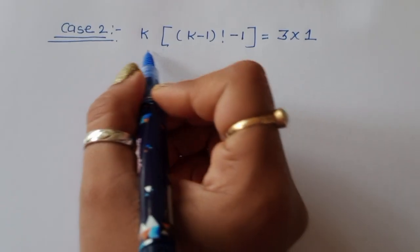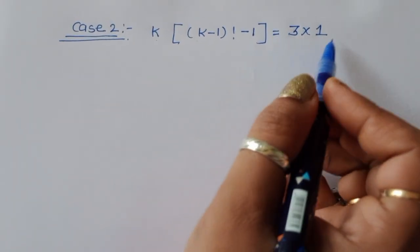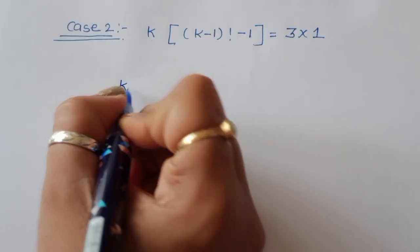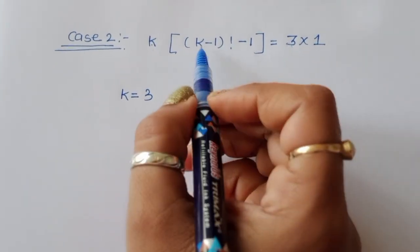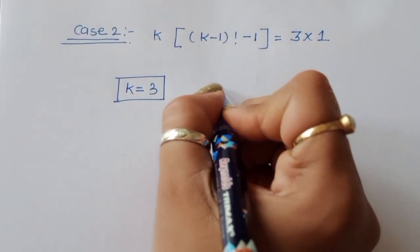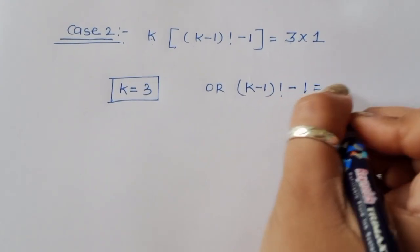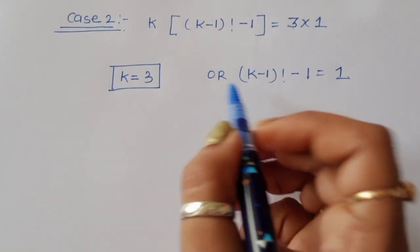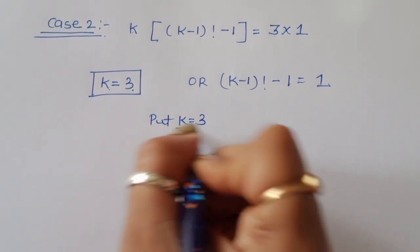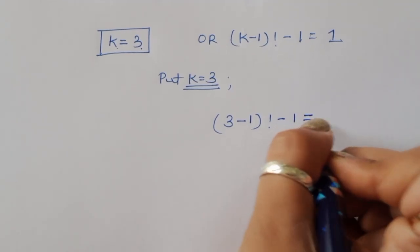Now for Case 2: k times (k minus 1) factorial minus 1 equals 3 times 1. Comparing LHS and RHS, k equals 3, and (k minus 1) factorial minus 1 equals 1. Substituting k equals 3: (3 minus 1) factorial minus 1 equals 1.